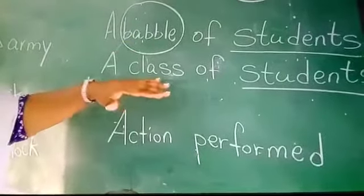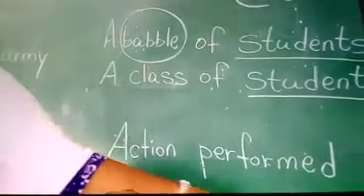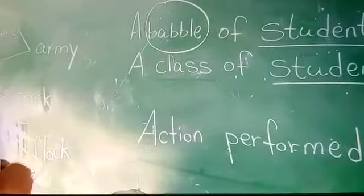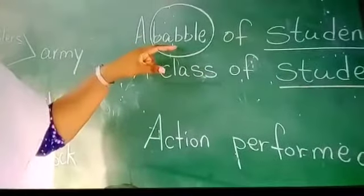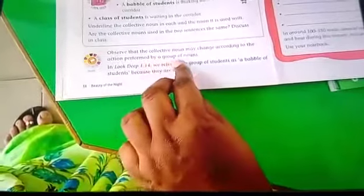The action performed here: all the students are talking at one time, all the voices are coming at one time, so we are using 'babble' here. And when all the students are waiting, the action here is they are waiting at a time. So the action which is performed by them — depend on that — we will use collective noun. Collective nouns may change according to the action performed by a group of nouns.